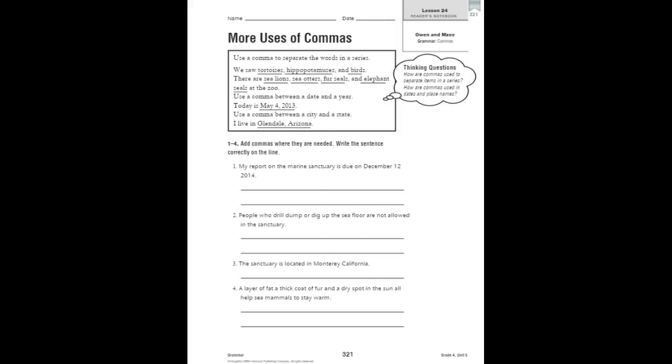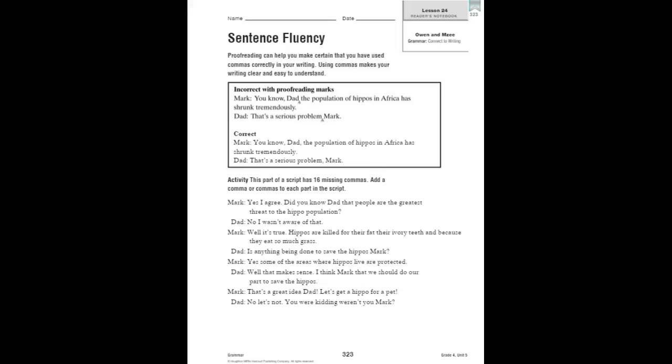On page 323 is where we're going to practice proofreading and work on our sentence fluency using commas correctly, because it makes your writing clear and easy to understand. They show you the proof marks that you need to use and the incorrect way to revise and proofread.